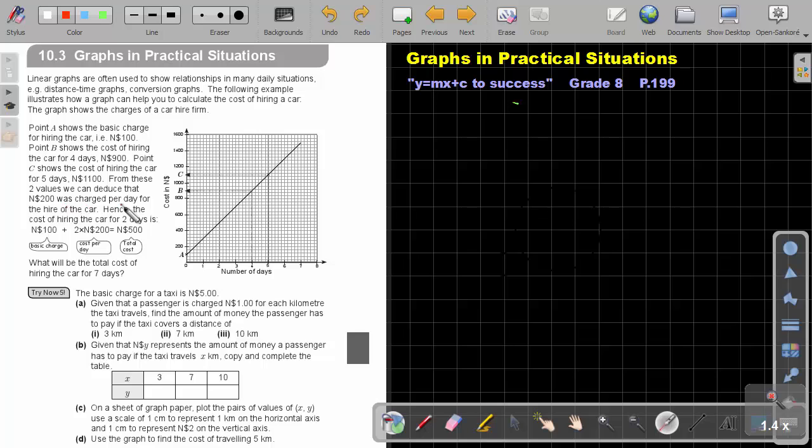So what's charged per day for the hire of the car? Hence the cost of hiring the car for 2 days is the basic charge of $100 plus 2 times $200, which will be $400, plus $100, which will be $500. So if I asked you, what will be the total cost of hiring the car for 7 days? Just put the 7 there. So 7 times $200 will be $1,400, plus the $100 will be $1,500.